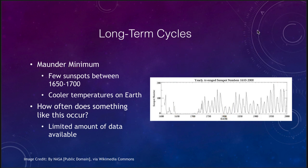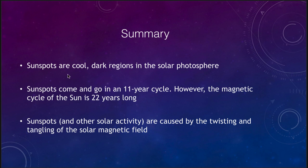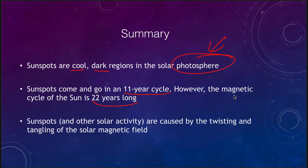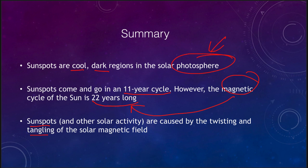To finish up with our summary: sunspots are the cool dark regions on the photosphere of the sun, visible as darker areas on the visible surface. They come and go in an 11-year cycle; however, the entire magnetic cycle of the sun is 22 years long. Sunspots and other solar activity are all caused by the twisting and tangling of the solar magnetic field due to differential rotation. That concludes our lecture on the solar cycle — we'll be back next time for another topic in astronomy. Until then, have a great day, everyone.